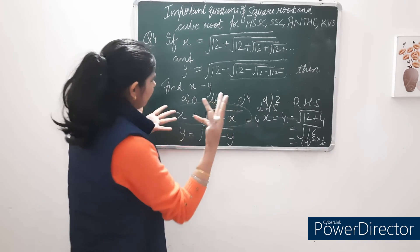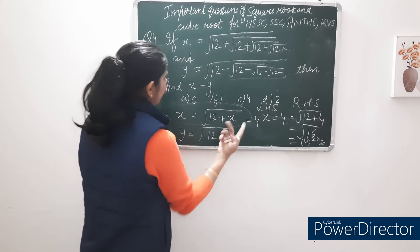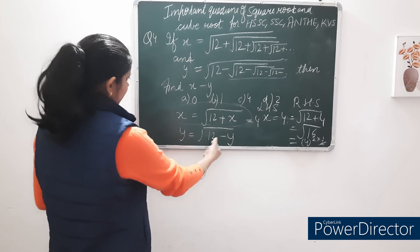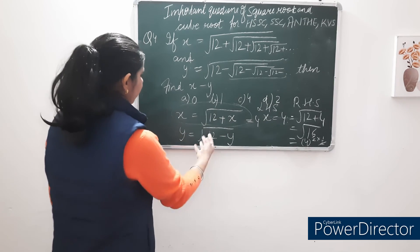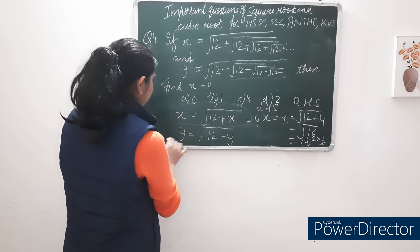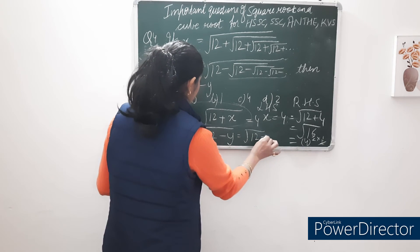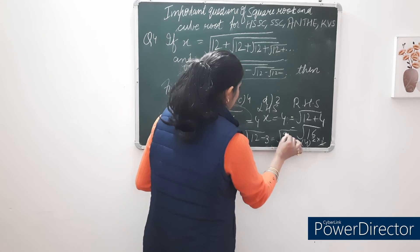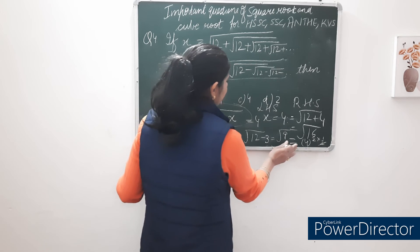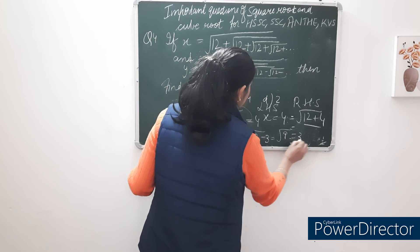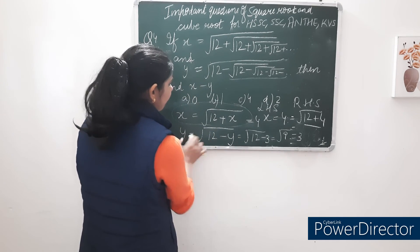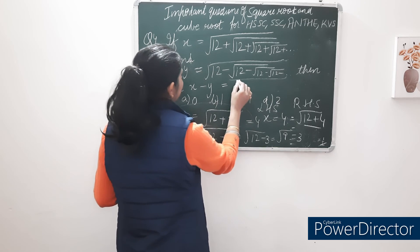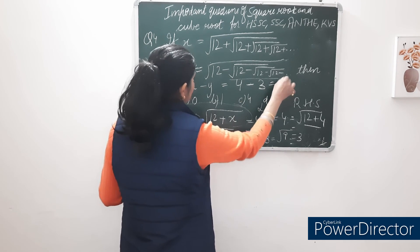Now for y: we test y = 3. Right hand side = √(12 − 3) = √9 = 3, and left hand side = 3. LHS = RHS, so y = 3. Therefore x − y = 4 − 3 = 1. The second option is the correct answer.